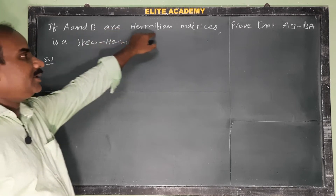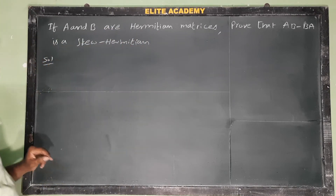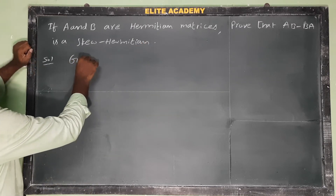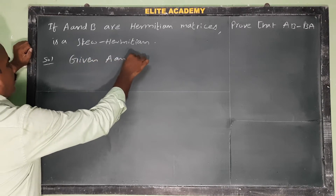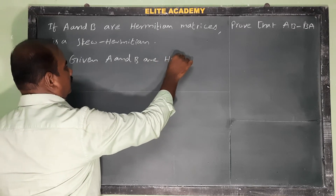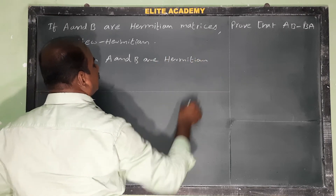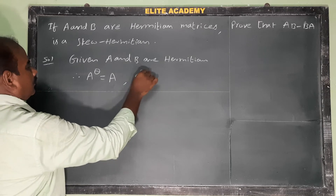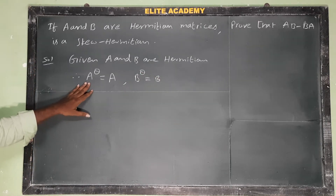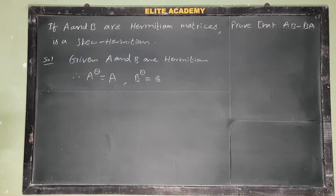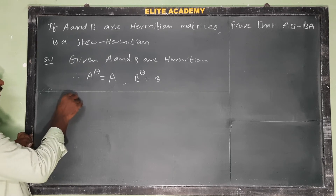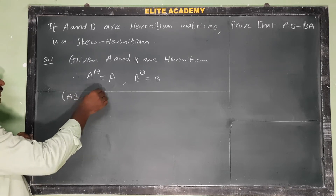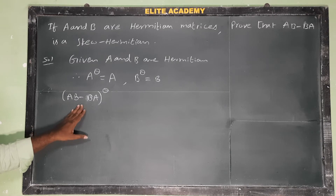If A and B are Hermitian matrices, prove that AB minus BA is a skew-Hermitian matrix. Given A and B are Hermitian, we can write A† = A and B† = B. We have to show that AB minus BA is skew-Hermitian.